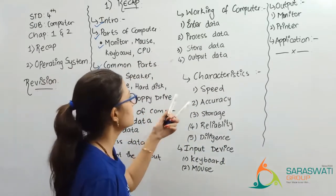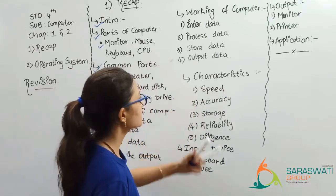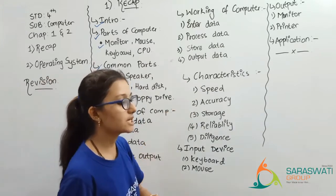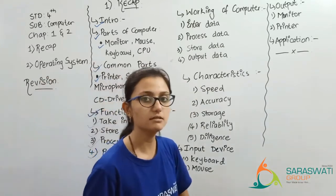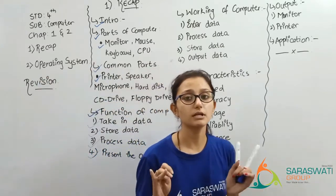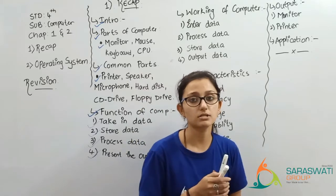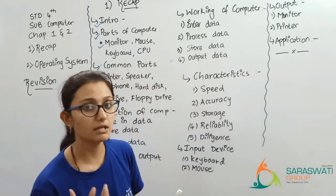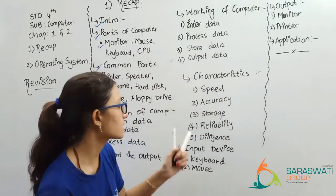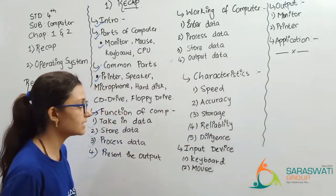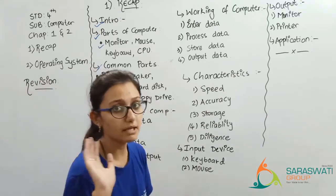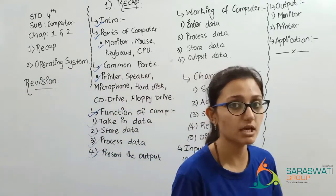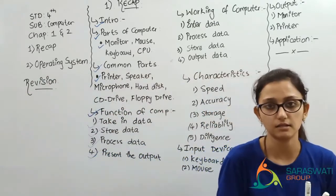Next thing: characteristics of a computer. The computer works at very high speed and its work is very accurate — it works very fast and successfully.